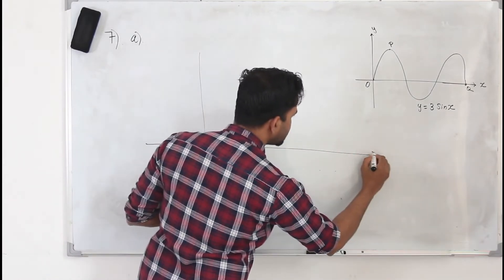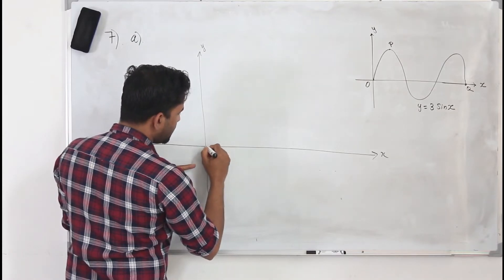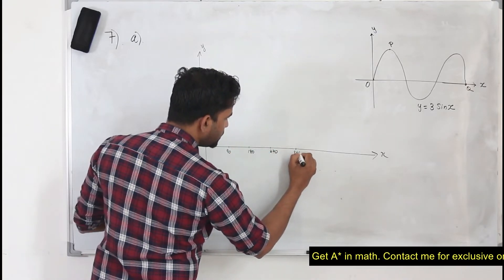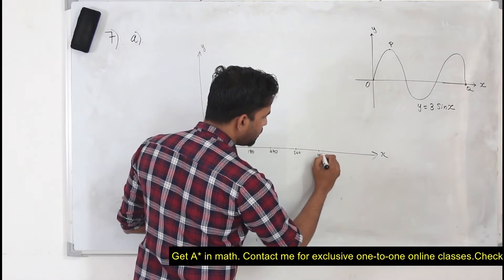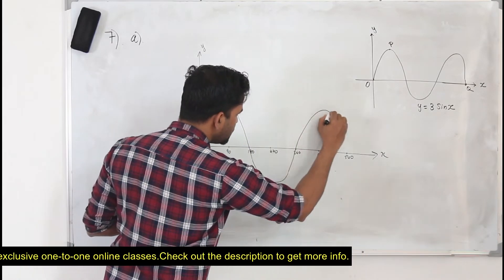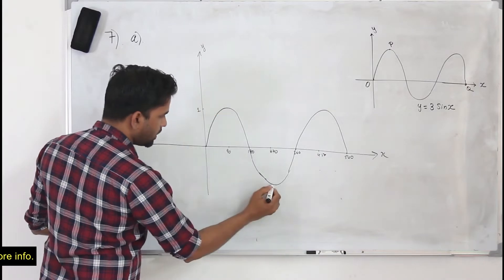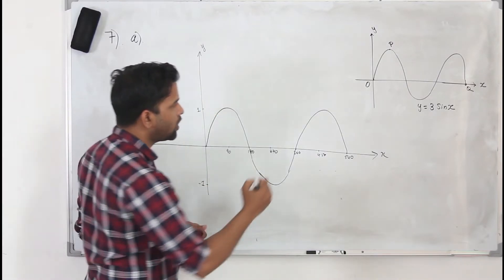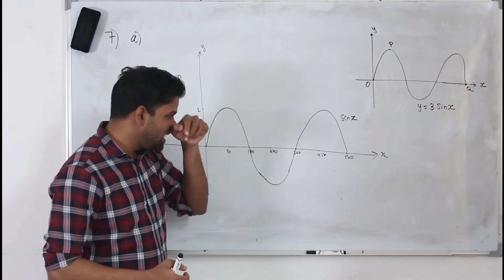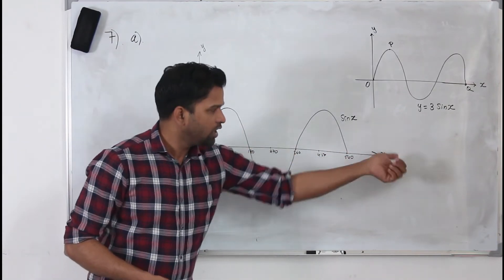Let me draw the sine curve first, with the y-axis and x-axis. You need to know that sine 0 is 0, so the sine curve starts from 0 and it will intersect the x-axis at every 180 degrees — at 180, 90, 270, 360, 450, and 540. The maximum point is 1 and the minimum point is minus 1. This is what the sine x curve looks like — a wave graph intersecting the x-axis at every 180-degree interval.